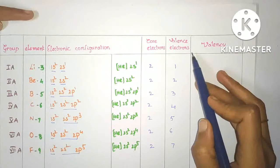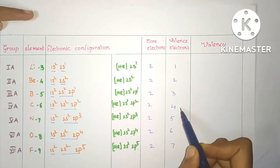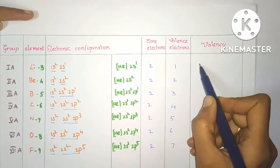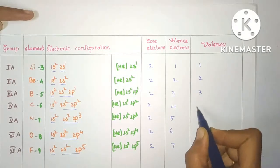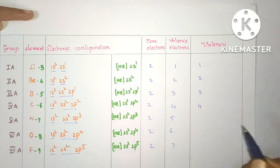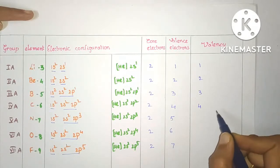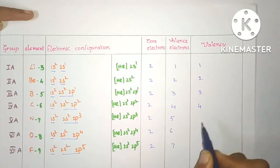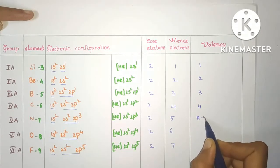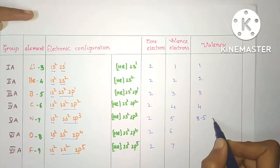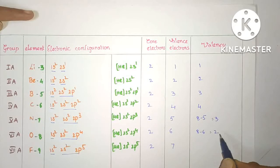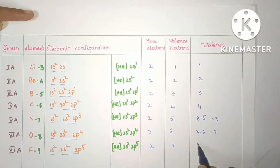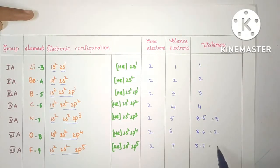Now let us look at valence electrons and valency. Up to 4 valence electrons, the number of valence electrons is equal to valency. For lithium 1, beryllium 2, boron 3, and carbon 4. When valence electrons are greater than 4, we calculate valency as 8 minus the number of valence electrons. So for nitrogen: 8 minus 5 equals 3. For oxygen: 8 minus 6 equals 2. For fluorine: 8 minus 7 equals 1.